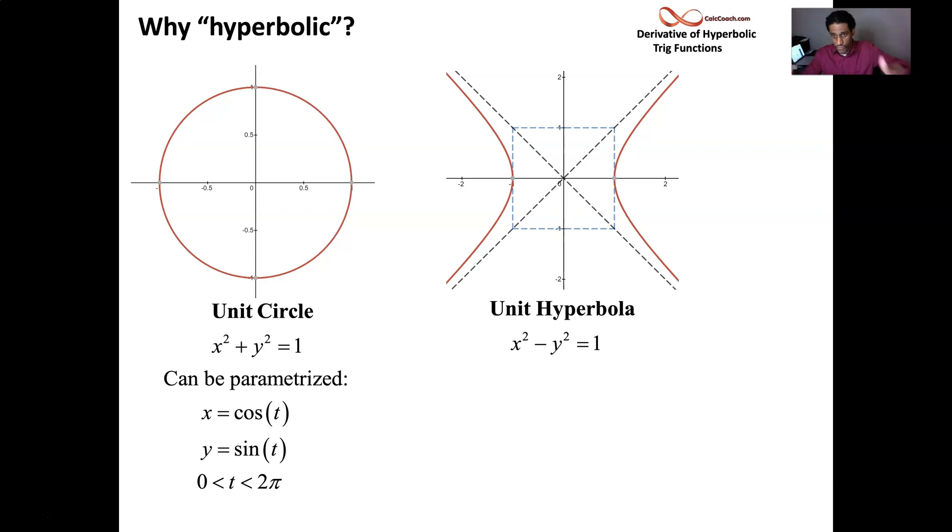The red branches there, they are the hyperbola. These other lines are just asymptotes and the box there is just drawn in to help you draw the shape. Asymptotically, you can approach Y equals X and Y equals negative X. And you can parameterize the unit hyperbola by using hyperbolic trig.